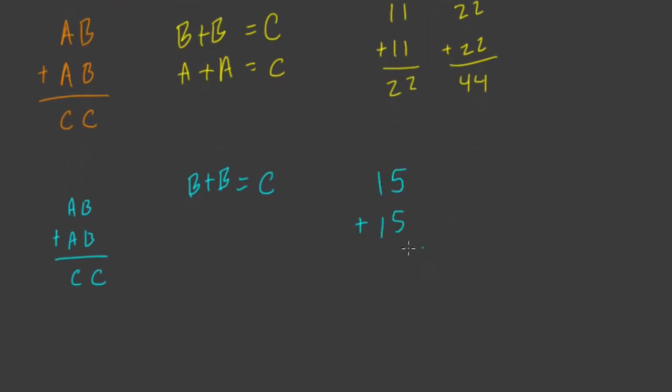15 plus 15. 5 and 5 gives you 10, right? So C is 0. And then we carry a 1 up here. So we get 1 plus 1 plus 1, or 30, or A plus A plus 1. So think about it that way. We're going to get A plus A plus this 1 that we're always carrying. So the A plus A plus 1, we're saying, also, can that equal C as well? Absolutely not. Think about it this way.